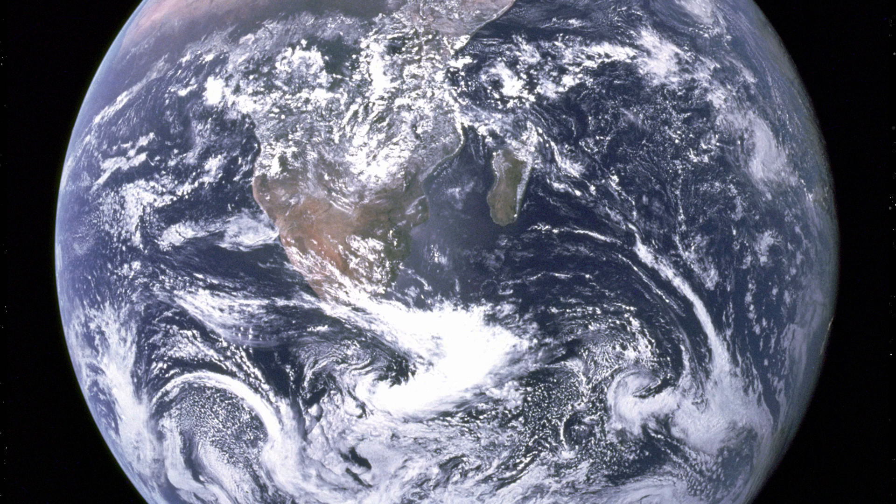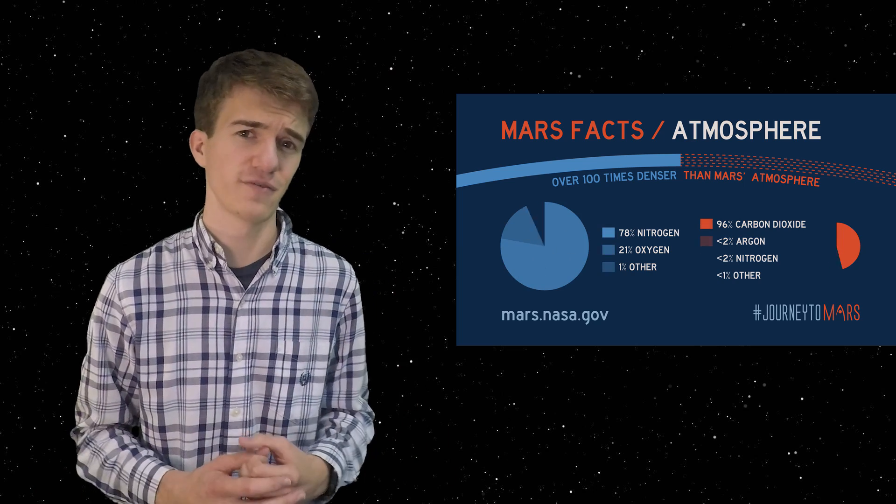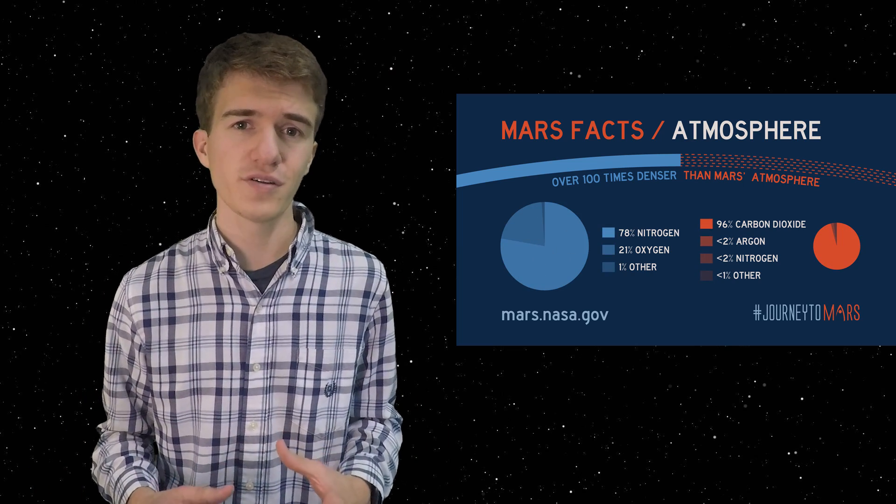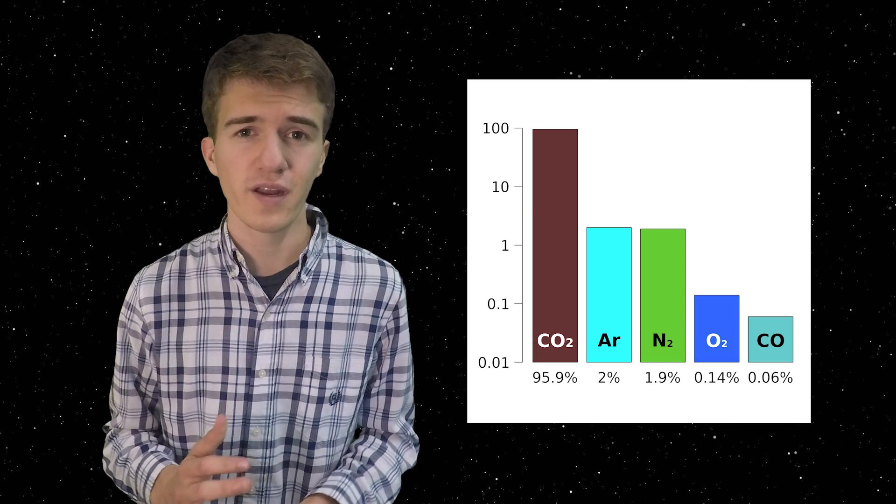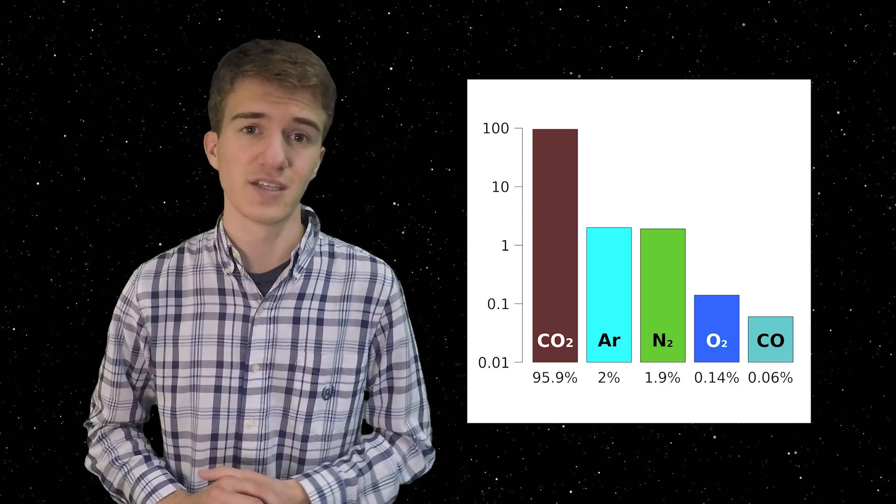So speaking of Earth, let's talk about some of the main differences between the Martian atmosphere and the Earth's atmosphere. To begin, Mars is mostly made up of carbon. Actually, 96% of its atmosphere is carbon, with argon, carbon monoxide, oxygen, all those being a lot smaller.